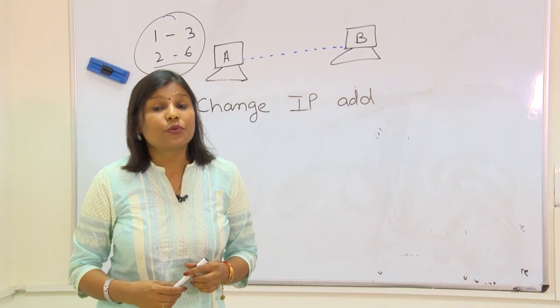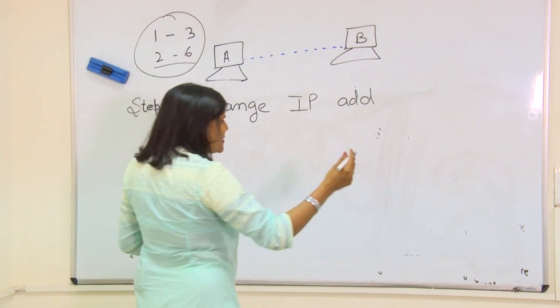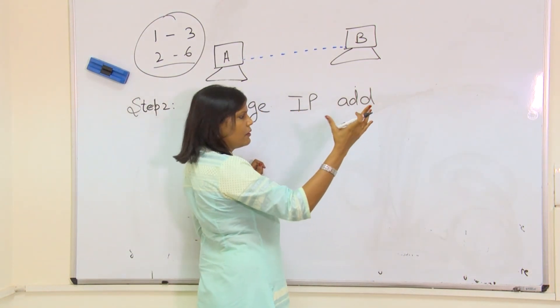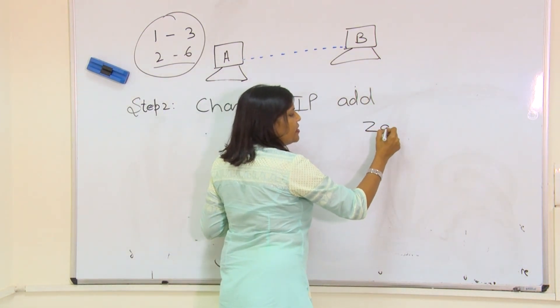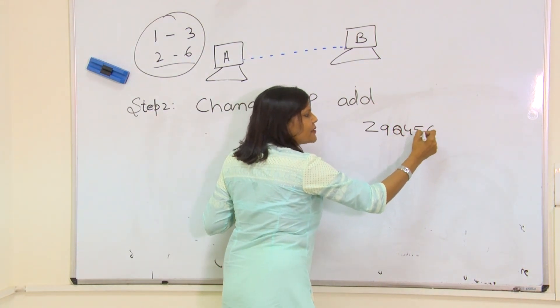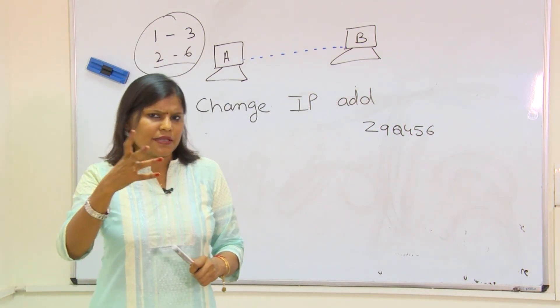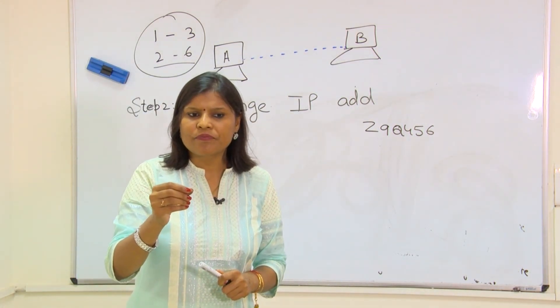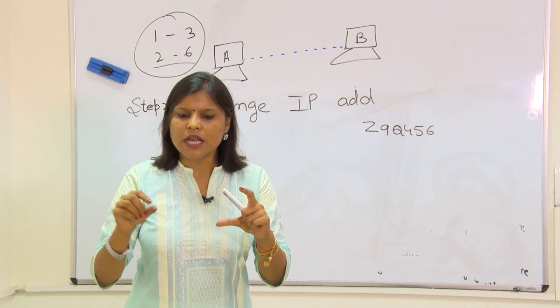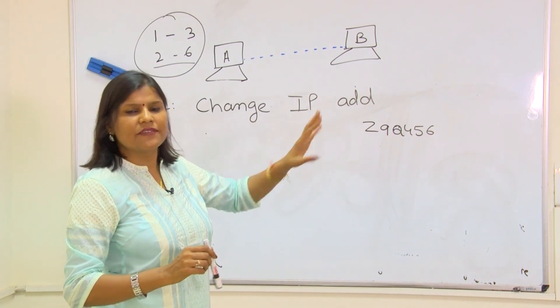I would suggest one analogy here. Let's say your house number is very unique, that is Z9Q456, something like that. Imagine I will send you a letter and on this letter, I just write this address, that is Z9Q456.